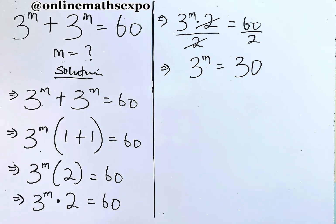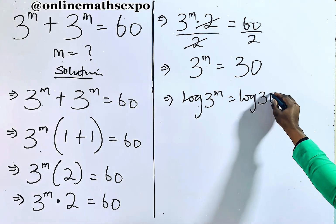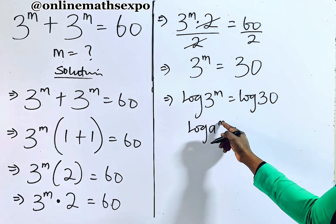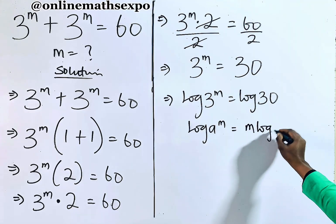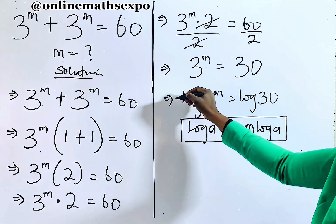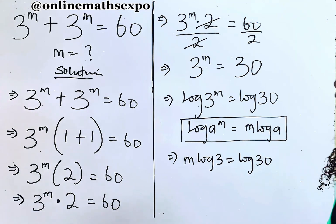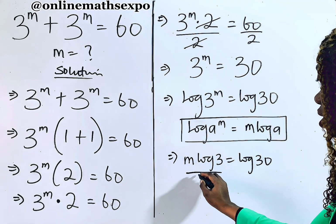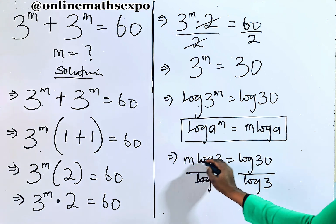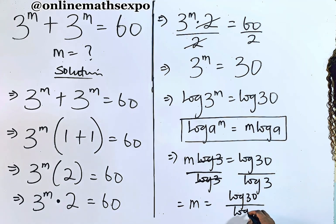Now, we'll just quickly take the log of both sides. So we have log of 3 to the power of m is equal to log of 30. Remember, for every log of a to the power of m, it's always m — the power multiplies — m log a. We apply this rule on the left side, so the m will multiply, giving us m log 3 is equal to log of 30. Divide both sides by log 3 to get m, and this gives us m is equal to log of 30 divided by log of 3.